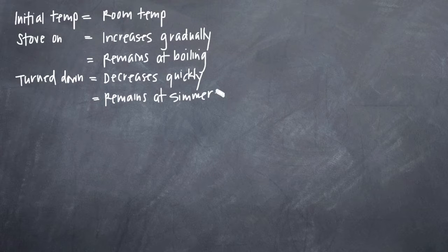The description we've been given is that the initial temperature of the water is room temperature. Then when the stove is turned on, the temperature of the water increases gradually until it reaches a boil, where the temperature remains constant. Then at some point, the temperature is turned down and the water temperature decreases quickly to a simmer, where it remains until the pot is dumped out.